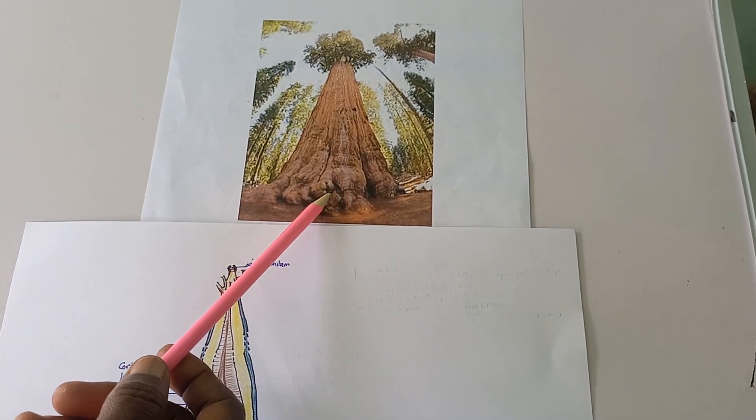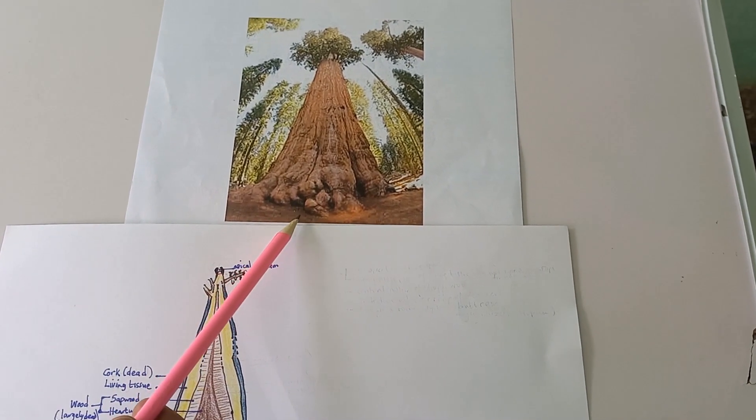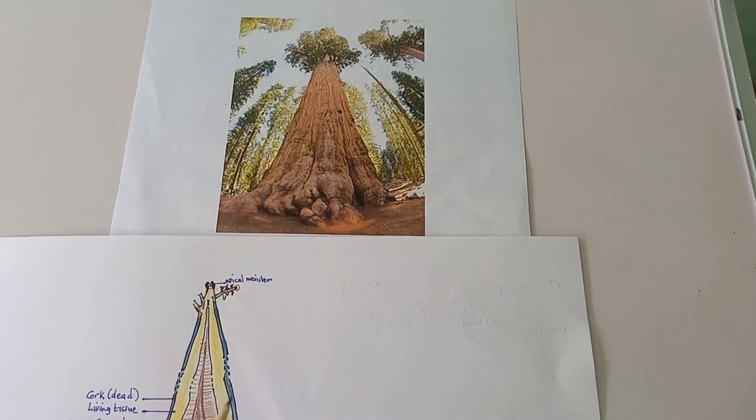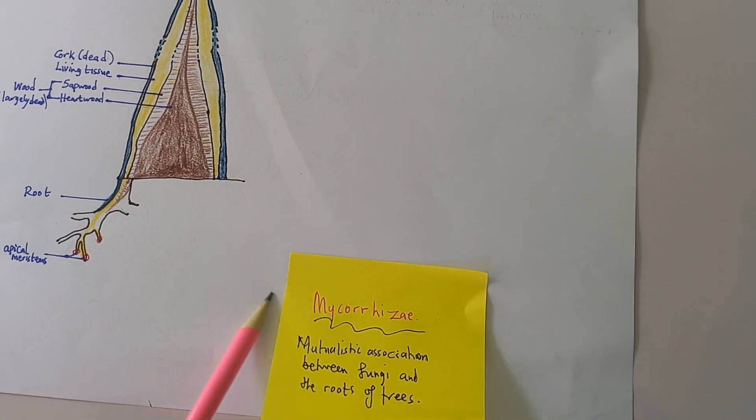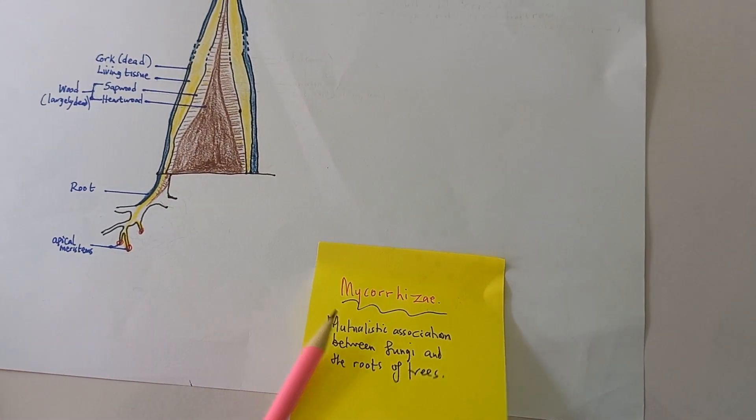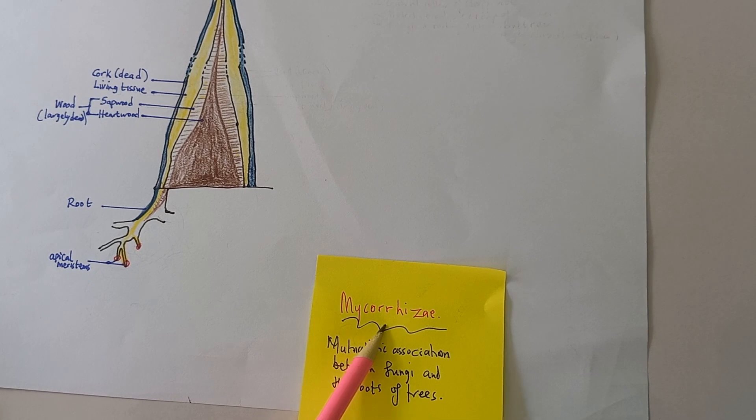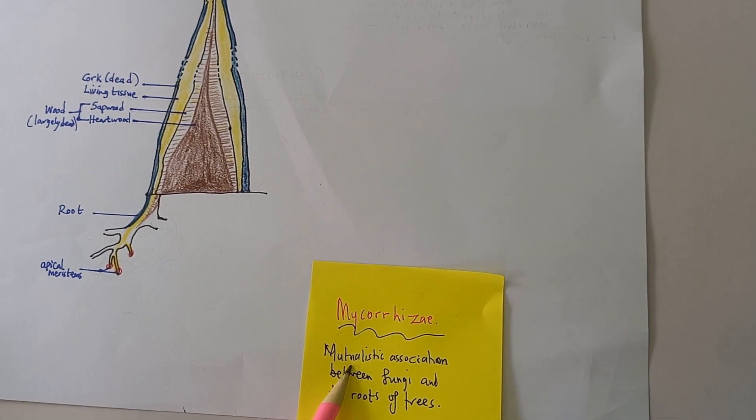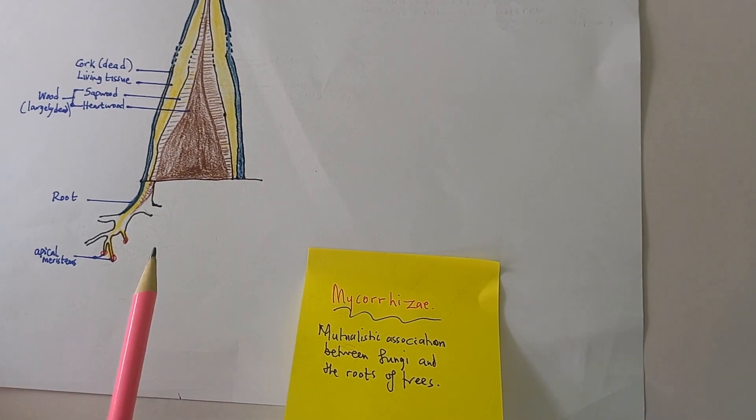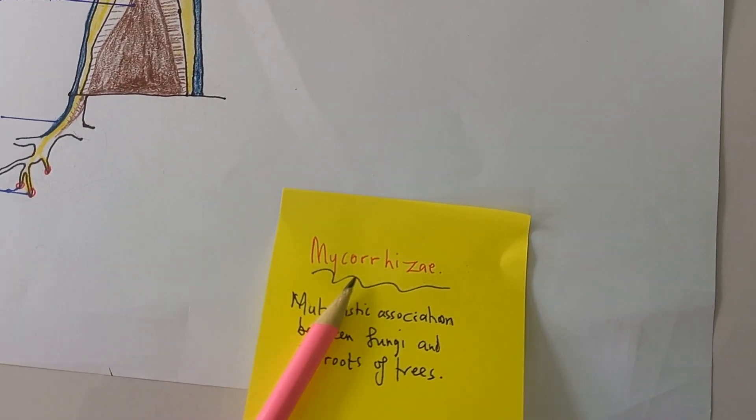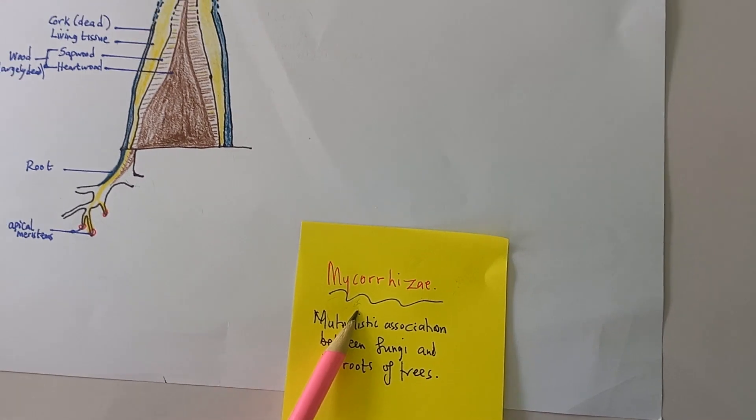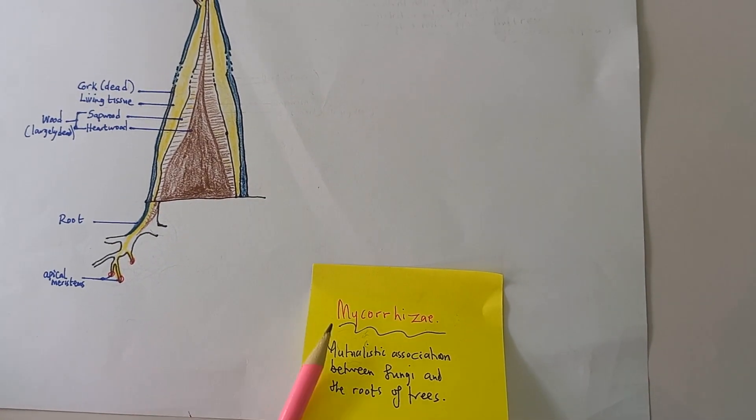Strong buttress roots and extensive rooting system to keep the tree in place. The rooting system is also extensive in the soil and it has fungi associated with the roots. That association is called mycorrhiza, where fungi is intertwined with the roots to increase the surface area for absorption of water and mineral salts.